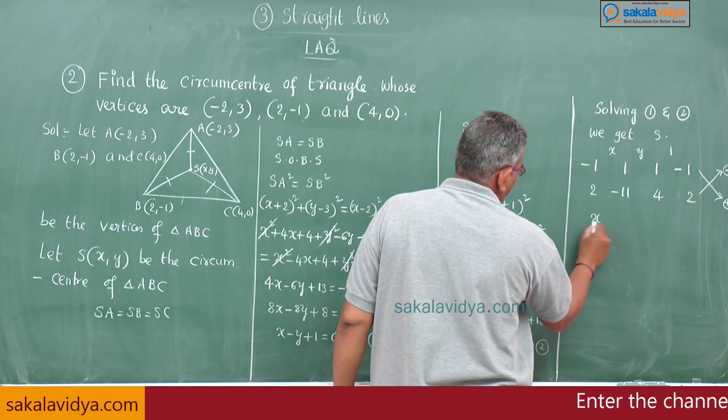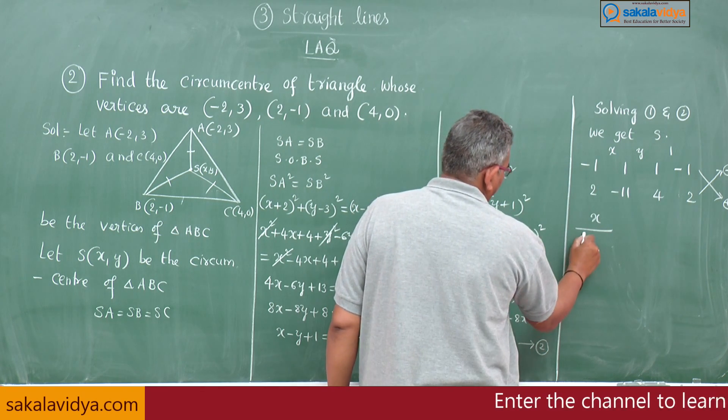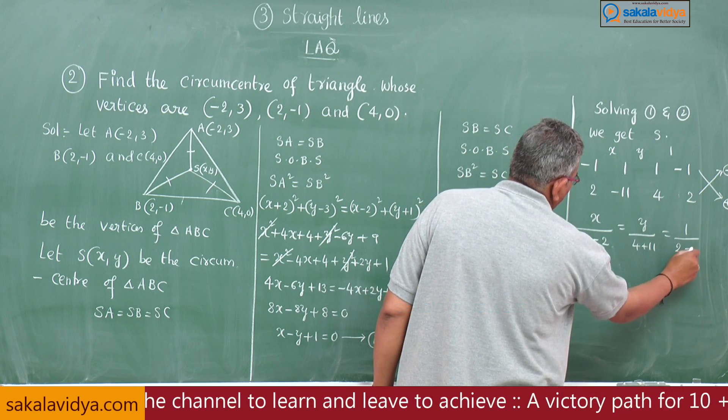This is plus, while multiplying upwards multiply with -1. So x/(11-2), y/(4+11), 1/(2+4). x/9, y/15, 1/6. x = 9/6, y = 15/6.